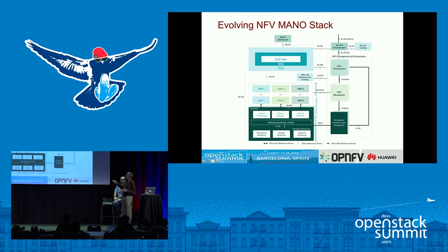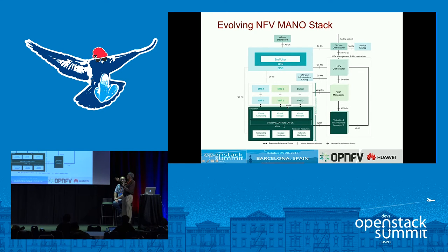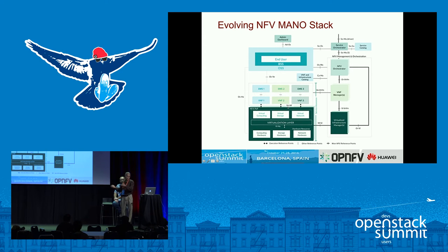Above that comes the actual OSS and BSS. If you look at the end users, the BSS and OSS — business support services and orchestration services — all that the end user wants comes through the dashboard. They look at the service catalog and try to orchestrate a given service. Examples include vCPE and vIMS, standard use cases for fixed and mobile networks.